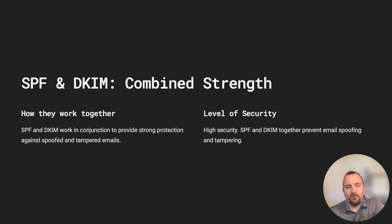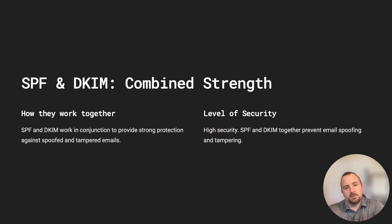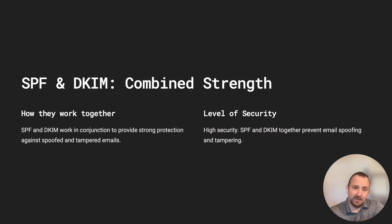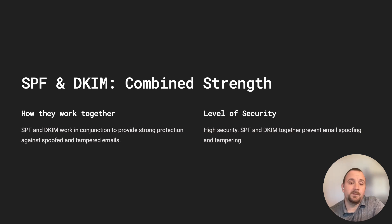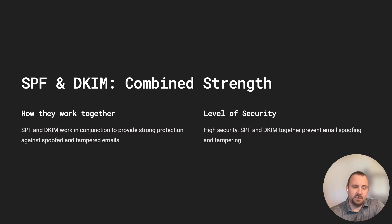Now that we've talked about SPF and DKIM, let's talk about the combined strength they offer to your organization. By implementing both SPF and DKIM together, it provides a robust defense against email-related threats, enhancing your security and trustworthiness for the organization's online presence. SPF verifies that an email is sent from the authorized IP address on behalf of the domain. DKIM signs the email content using the sender's private key, verifying it's authentic and preventing tampering or modification during transmission. By implementing both SPF and DKIM, you provide a robust defense against email-related threats such as spam, phishing, and spoofing attacks.